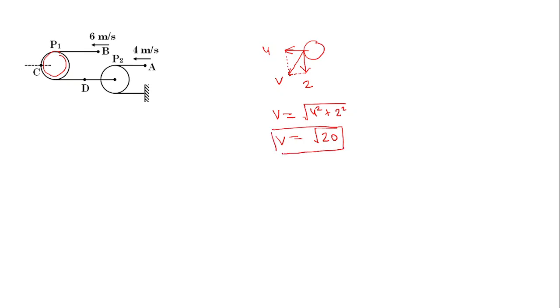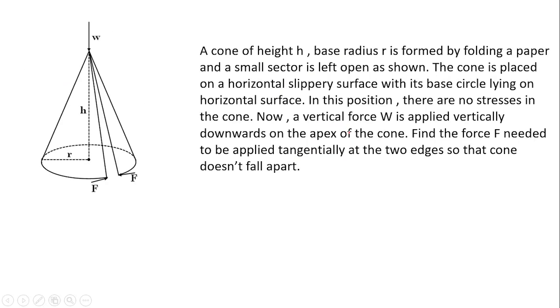So v = √20 meters per second, and this is the speed of point C on the string. This is our answer for the first question.